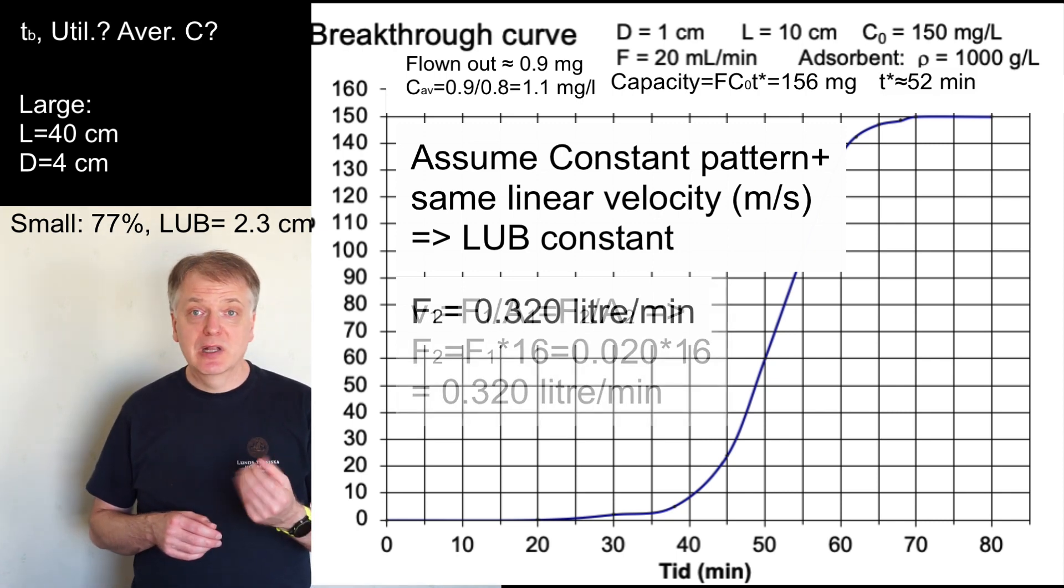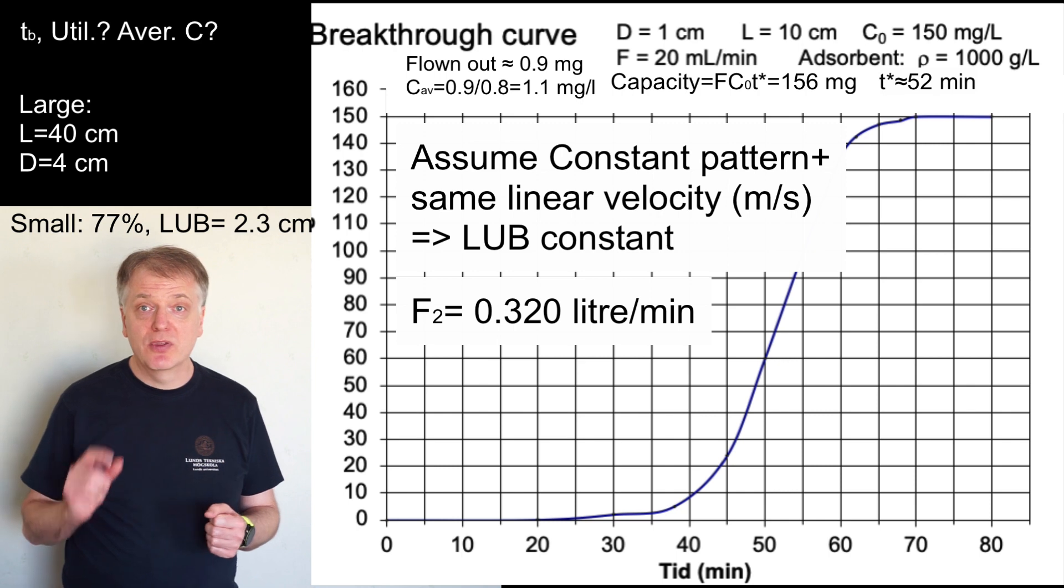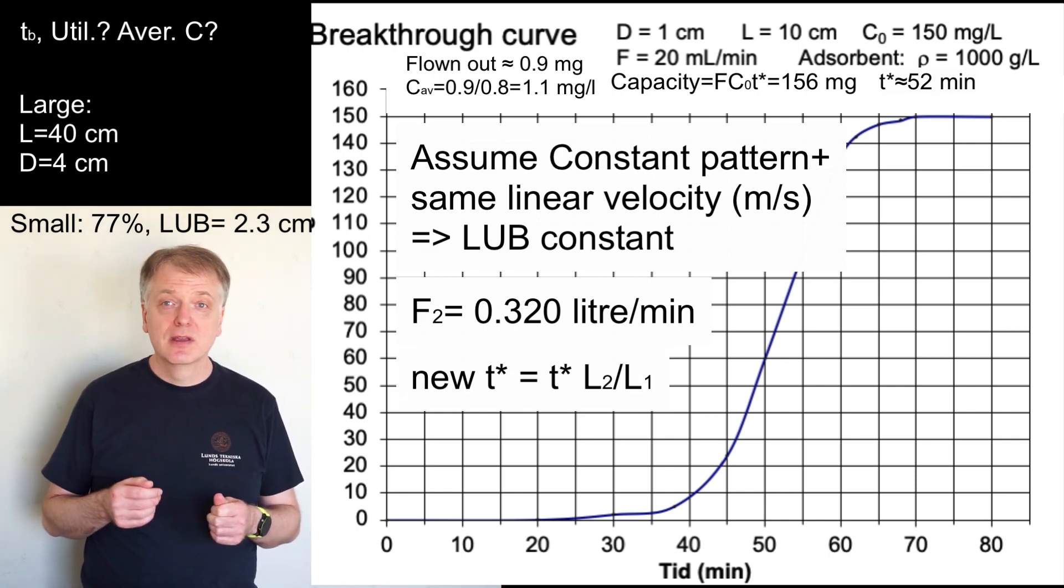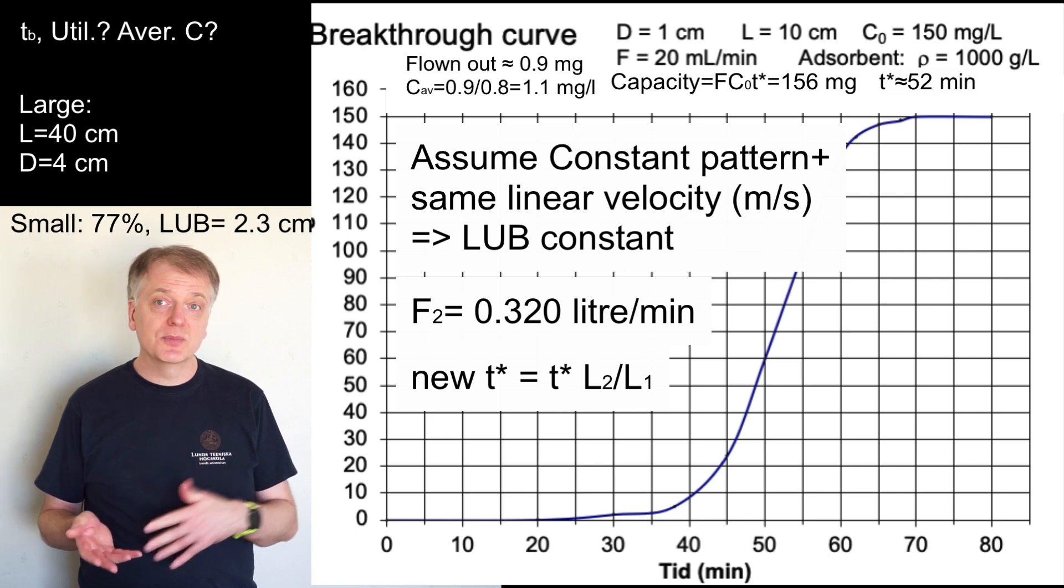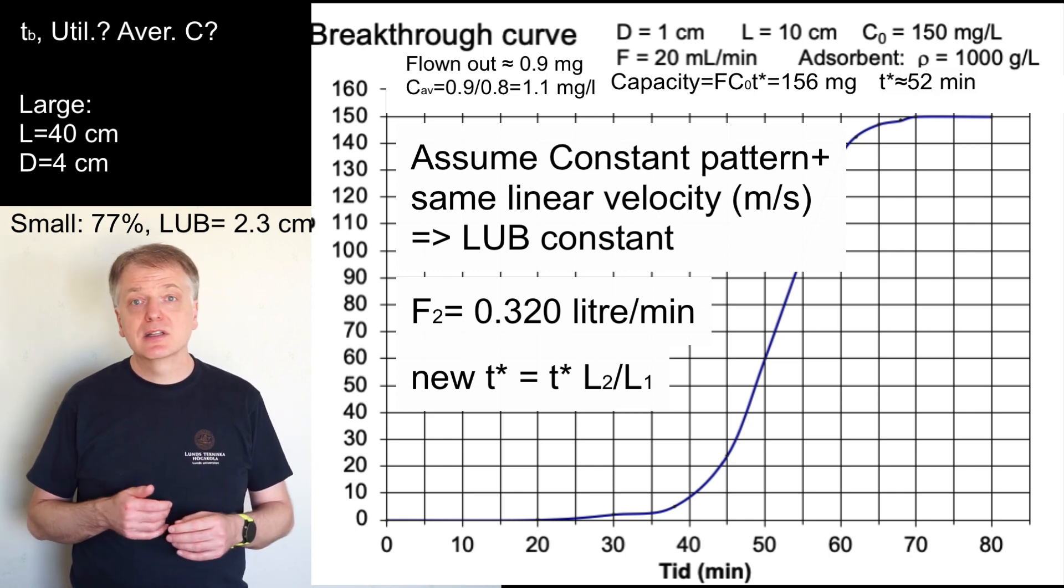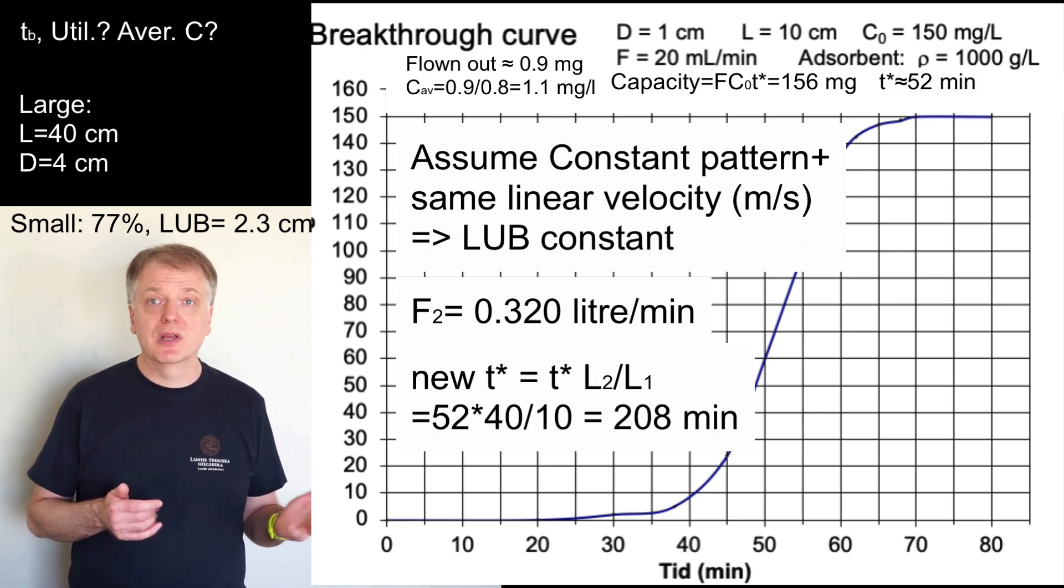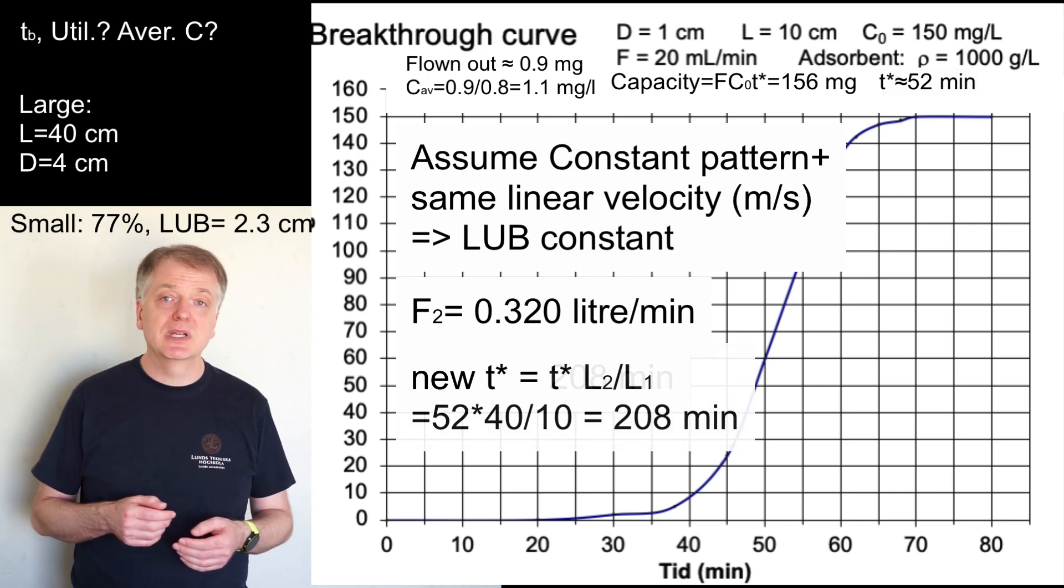Length of unused bed LUB is the same as before, 2.3 centimeters. T star is proportional to the column length and since the length increases from 10 to 40 centimeters we get our new T star as our old T star 52 divided by 10 and multiplied with 40 so 208 minutes.